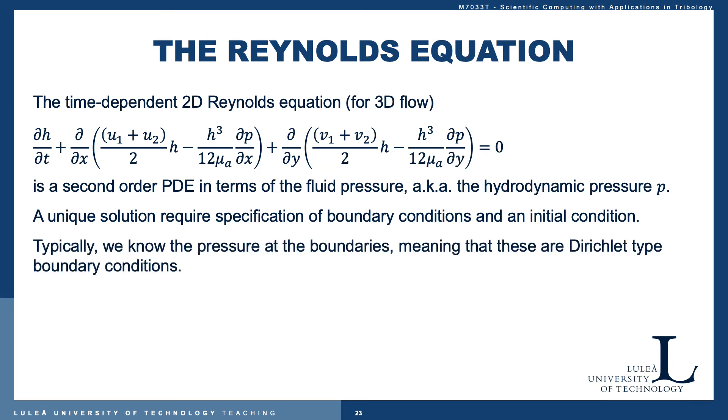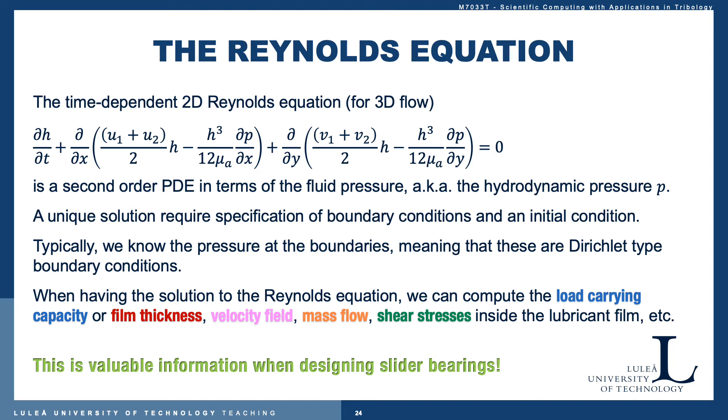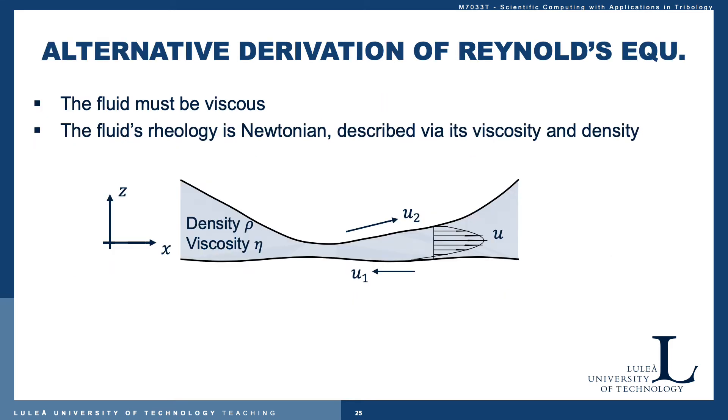A unique solution requires specification of the boundary conditions as well as an initial condition. Typically we know the pressure at the boundaries, meaning the boundary conditions are of Dirichlet type. When we have the solution to the Reynolds equation in terms of the pressure, we can compute the load-carrying capacity or film thickness. We can compute the velocity field, mass flow, and shear stresses inside the lubricant film—all valuable characteristics when designing slider bearings, for example.